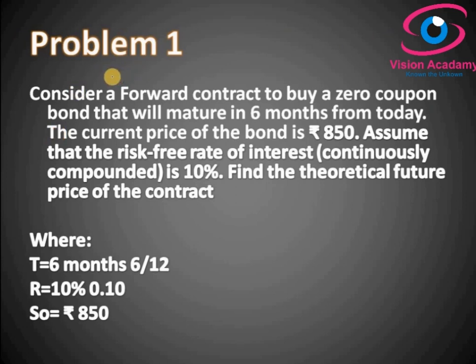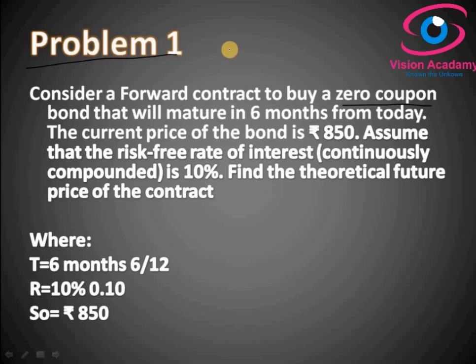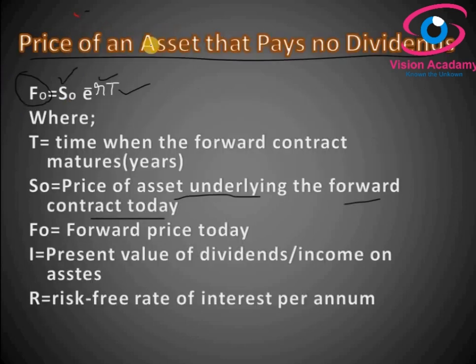We have a problem for which we will calculate the Price of an Asset that Pays No Dividend. Consider a forward contract to buy a Zero Coupon Bond. A Zero Coupon Bond means one in which you won't get periodical coupon returns, but at the end of maturity you will receive the coupon plus principal amount — both together. So it falls under the Price of an Asset that Pays No Dividend case.